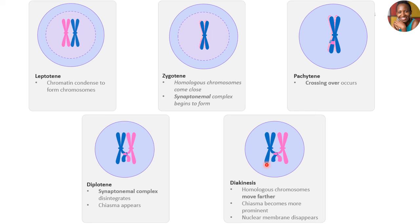A further summary to help us understand it better: at Leptotene, chromosomes are condensing and becoming visible. At Zygotene, homologous chromosomes come close together, giving us the synaptonemal complexes. At Pachytene, there is successful crossing over of the chromatids. At Diplotene, the synaptonemal complexes are disintegrating and the chiasma is appearing. At Diakinesis, the homologous chromosomes move further apart, the chiasma becomes more prominent, and the nuclear membrane disappears, indicating the last stage of Prophase I.